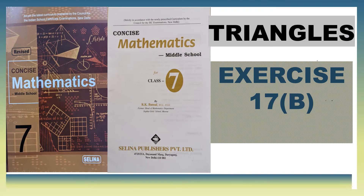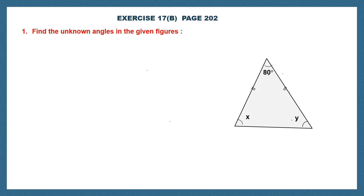Hello students. Today we are doing triangles exercise 17b. This is on page number 202. Find the unknown angles in the given figures. We're going to have many questions here and we're going to find out the unknown angles.